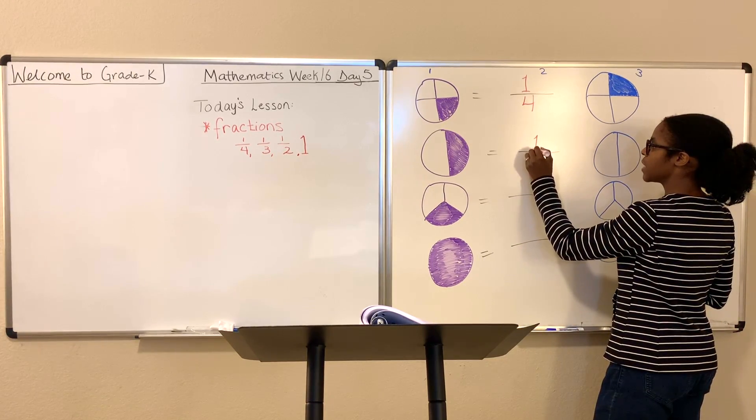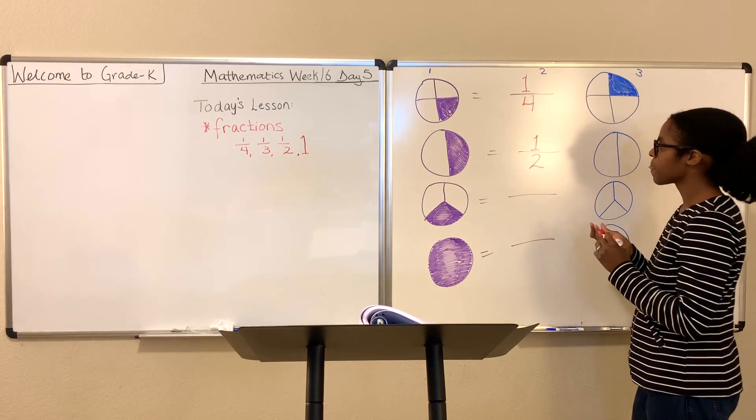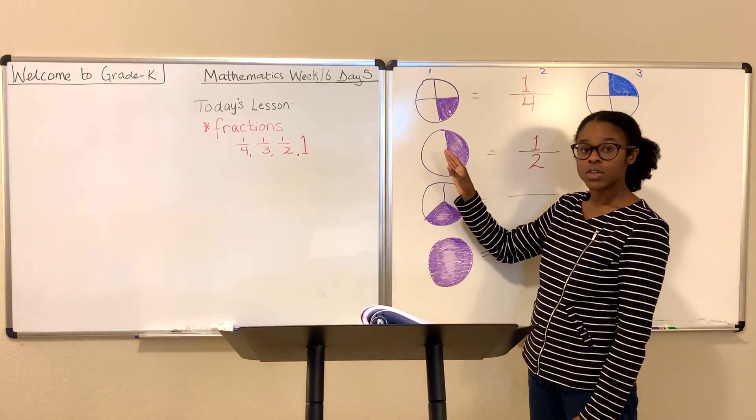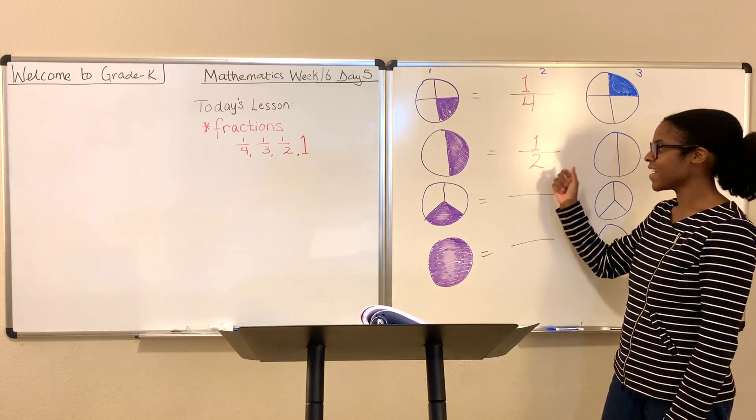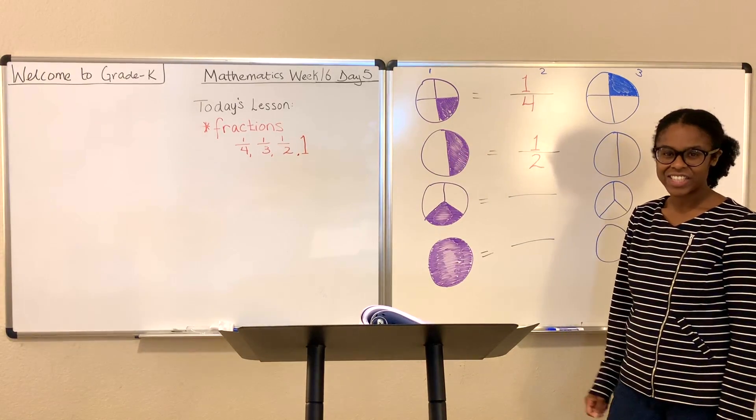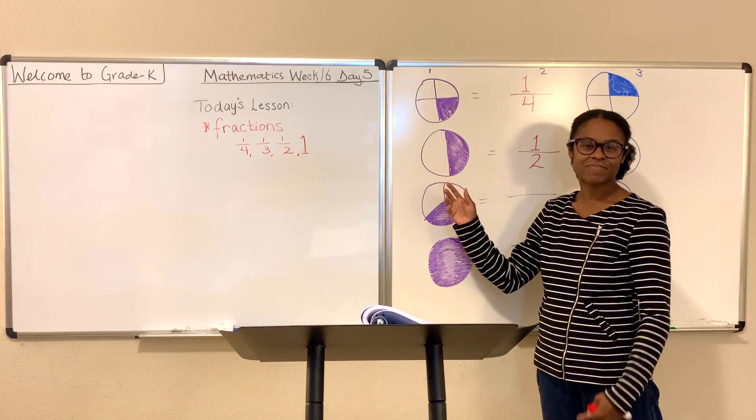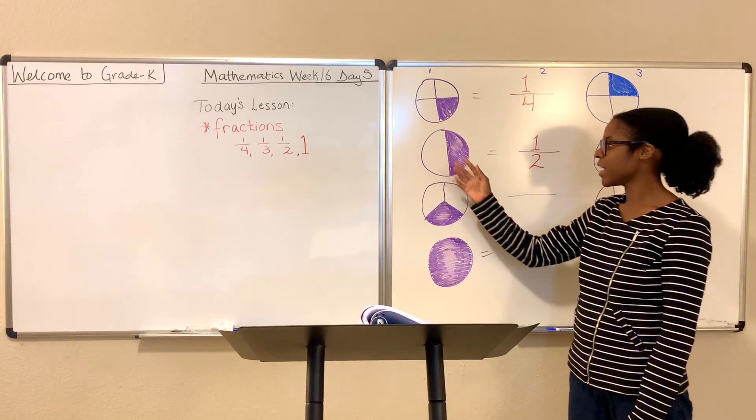1, only 1 part of this circle is shaded. So that's the part you're going to write up here. We call that the numerator. You can say 1 out of 2 is shaded, or you can say 1 half. 1 half is shaded. Would you like to have half of my sandwich? 1 half is shaded. 1 half of something. 1 half.